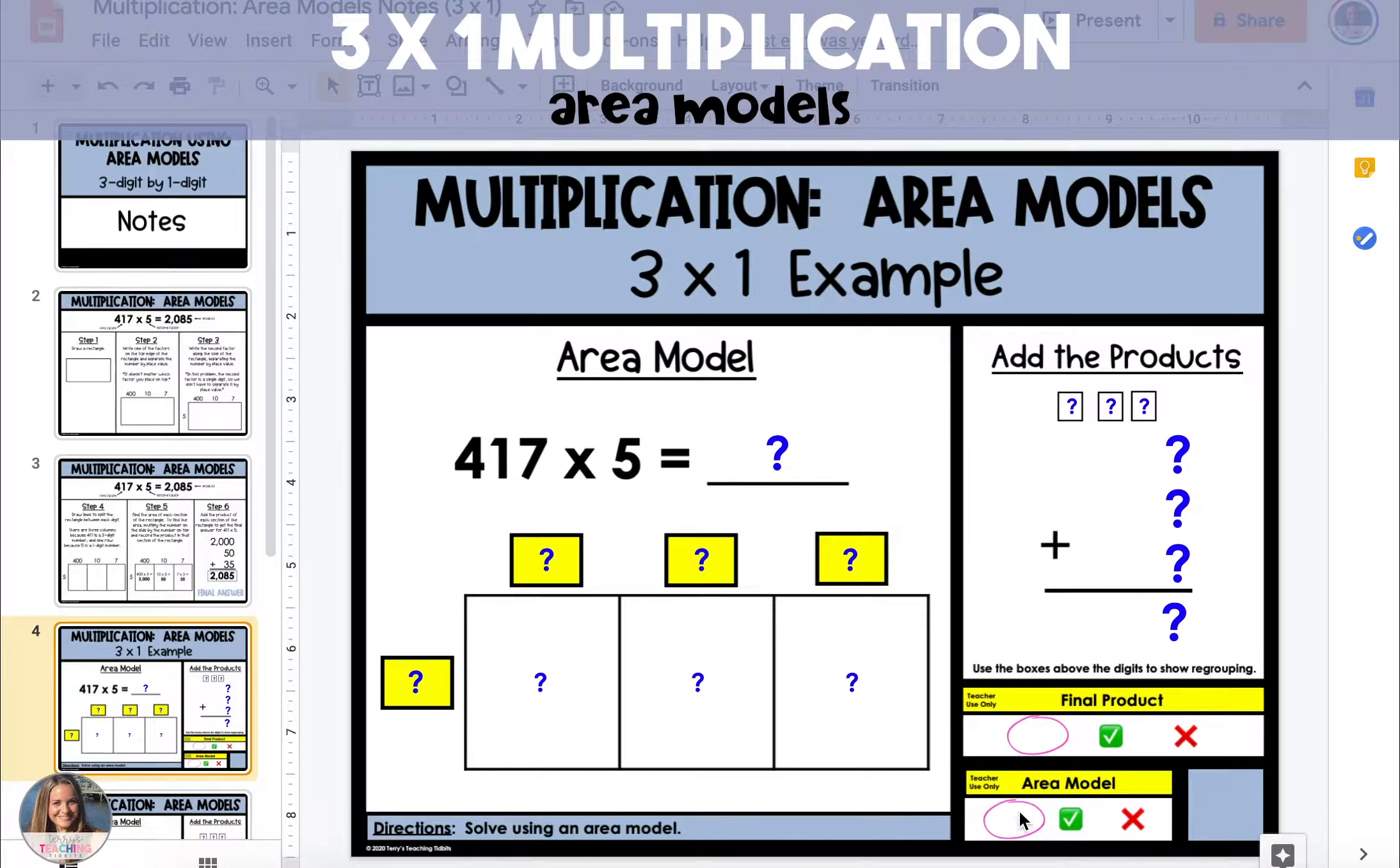In this example we're going to multiply a three-digit number by a one-digit number. We'll start with a rectangle and then we're going to take each of our factors. We'll put one of them on top of the rectangle and one of them on the side.